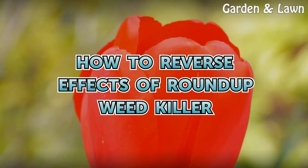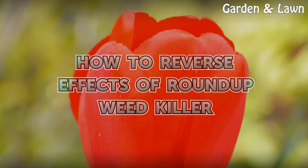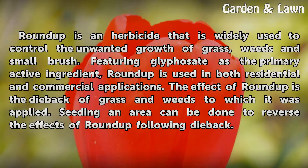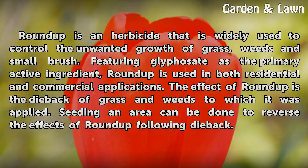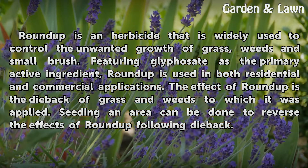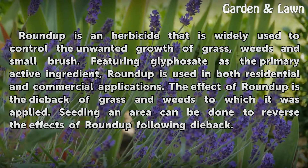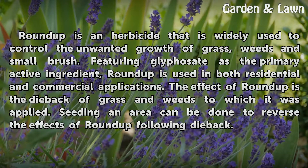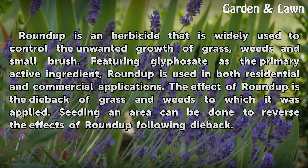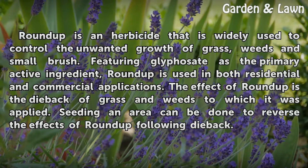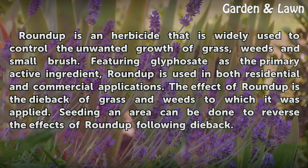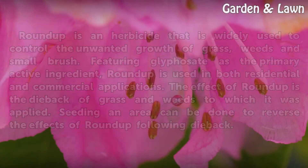How to Reverse Effects of Roundup Weed Killer. Roundup is an herbicide that is widely used to control the unwanted growth of grass, weeds and small brush. Featuring glyphosate as the primary active ingredient, Roundup is used in both residential and commercial applications. The effect of Roundup is the dieback of grass and weeds to which it was applied. Seeding an area can be done to reverse the effects of Roundup following dieback.